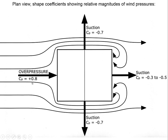We have coefficients related to form. The coefficient on the windward wall is plus 0.8 — the plus meaning overpressure. On the sidewalls, we get suction, so the coefficient is negative 0.7 — close in magnitude to the overpressure. On the leeward side, suction varies between minus 0.3 and minus 0.5, which is smaller in magnitude.